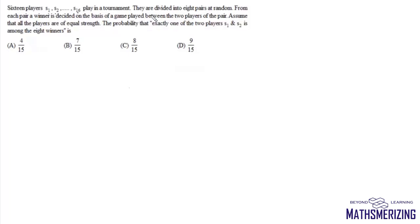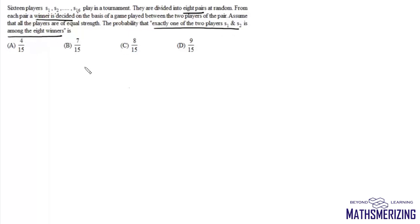Your question is: 16 players S1, S2 up to S16 play in a tournament. They are divided into 8 pairs at random. From each pair, a winner is decided on the basis of a game played between the 2 players of the pair. Assume that all players are of equal strength. Find the probability that exactly one of the 2 players S1 and S2 is among the 8 winners.